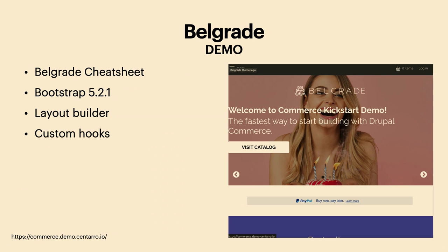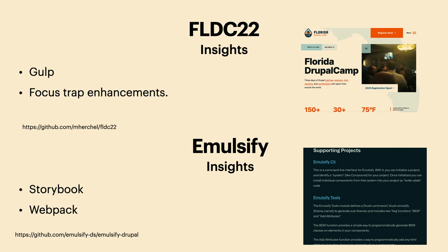Belgrade — that's the one from the Drupal Commerce team. The biggest thing I found useful from them is their custom hooks — really nice, neat, and creative — and they've done a lot with Layout Builder. Borrow their custom hooks. They also have a Belgrade Cheat Sheet that compiles their styles and builds a kitchen sink page — a full component dump — which can be pretty useful. Sometimes stakeholders don't want Storybook; they just want a page showing all the components you have.